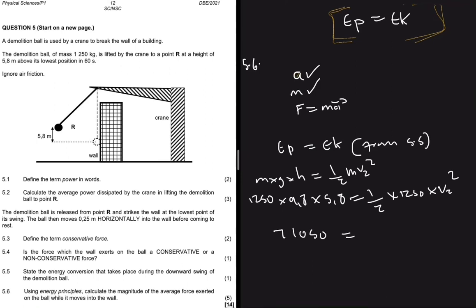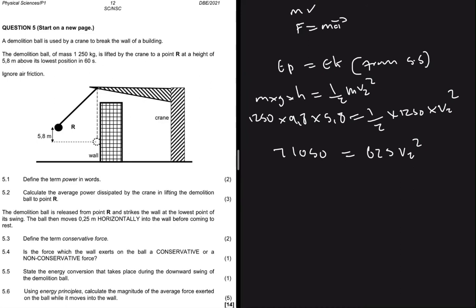And then I can solve for v_2 squared. So v_2 squared will be 71,050 divided by 625, and then take square root on both sides. I'll get a v_2 equals to, let me put that in the calculator, 71,050 divided by 625, and that is 10.6621 meters per second.